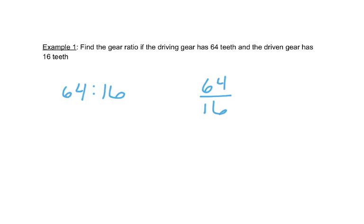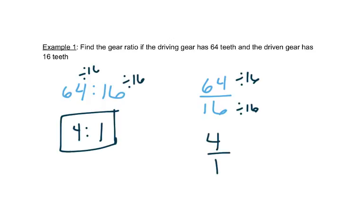Now we need to reduce this though, so we need to find something that goes into both 16 and 64, and I actually think the 16 goes into both. So let's divide both by 16. So 64 divided by 16 is 4, and 16 divided by 16 is 1. So we read this as 4 to 1, or we could write it like this, 4 to 1.